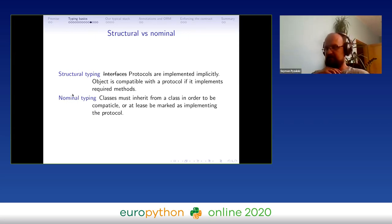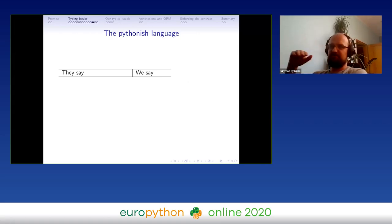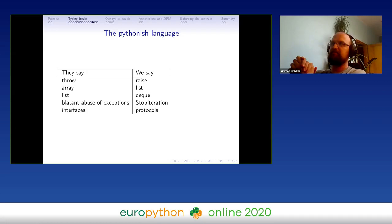Just a short digression. There is this idea that we pythonistas tend to use a language that is a little different from programmers in other languages. For example, we say raise where all the other languages say throw. We call lists what others say list, we say deque. If others say it's a blatant abuse of exceptions, we say StopIteration. Also, the thing that in most languages is called interfaces, we call it protocols. This is a little problem when we want to communicate with others, but we have to remember that this name protocol means the same as interface in Java or in golang.